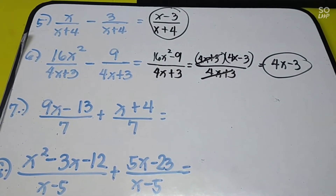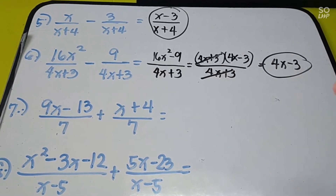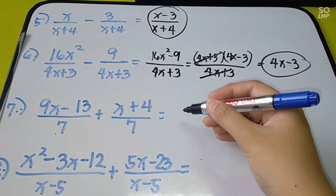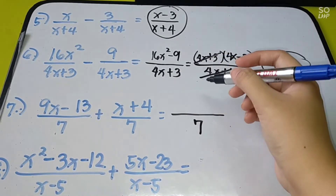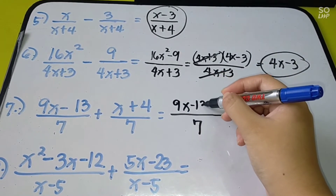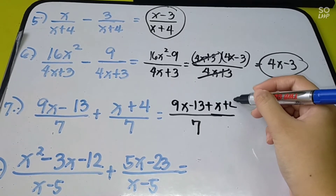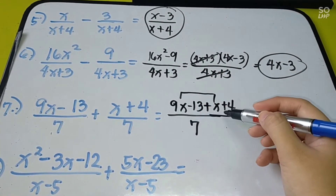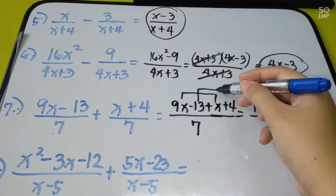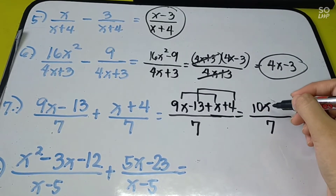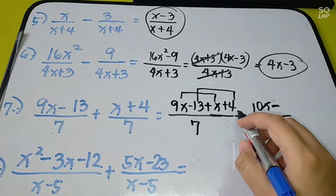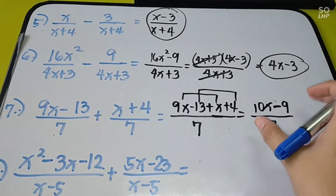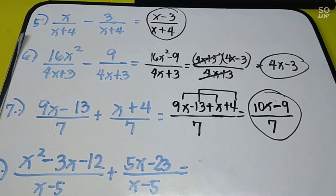Check if the numerator is factorable when doing addition and subtraction — same as with multiplication and division. If it can be factored, factor it so you can cancel. Number 7: same denominator of 7. Add the numerators: 9x minus 13 plus x plus 4. Combine like terms: 9x plus x is 10x, and negative 13 plus 4 — since 13 is larger and negative, subtract: 13 minus 4 is 9, giving negative 9. There is nothing to factor, so the final answer is 10x minus 9 over 7.